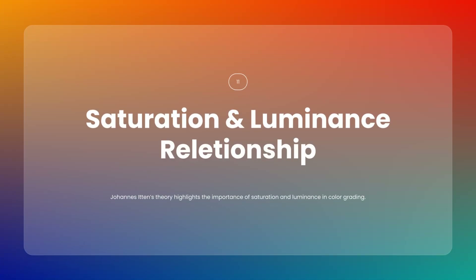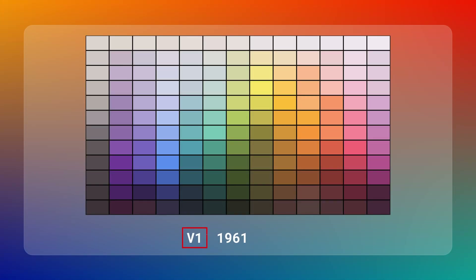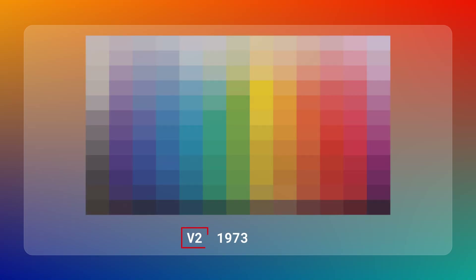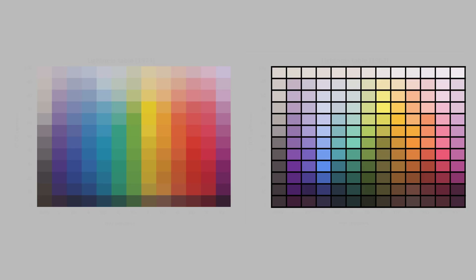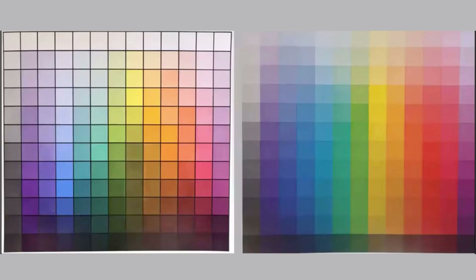According to Johannes Itten, the relationship between saturation and luminance is essential for creating pleasing, harmonious colors. Different colors look their best at different levels of brightness and saturation, and understanding this relationship is key to natural and aesthetically pleasing color grading.